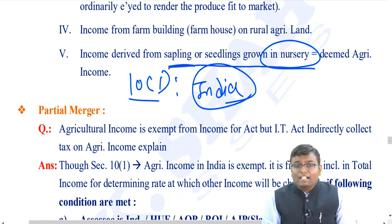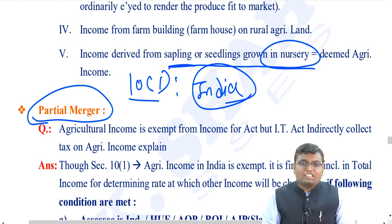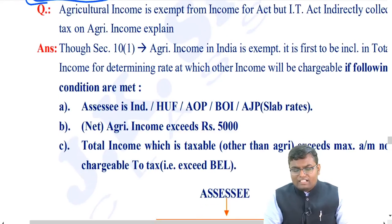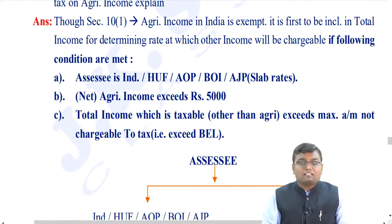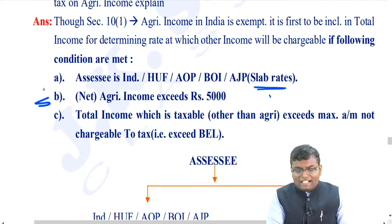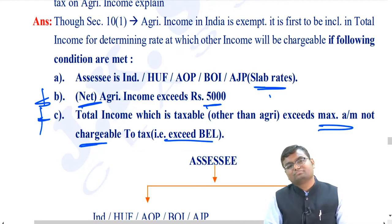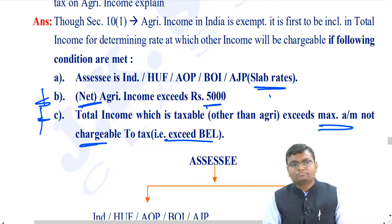However, while calculating the tax, sometimes the partial merger scheme will get applied. The partial merger scheme is applicable when three conditions are fulfilled: number one, you are a person taxable at slab rate — individual, HUF, AOP, BOI, AJP; number two, your net agricultural income (income minus agricultural expenses) is more than ₹5,000; and number three, your total taxable income is more than the basic exemption limit.